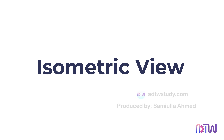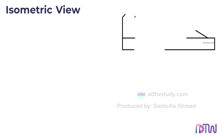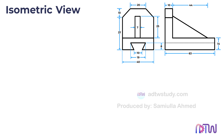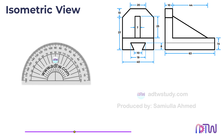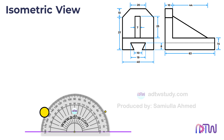In this video we will learn how to construct an isometric view using orthographic projections. This is our sixth video on the topic. These are the orthographic projections of the object. To construct the isometric view or 3D view of the object, we first need to create the isometric axis. To do this, take a ruler and draw a horizontal line, then mark a center point on this line. Next, take a protractor and mark 30 degrees on both sides of the center point as well as 90 degrees.